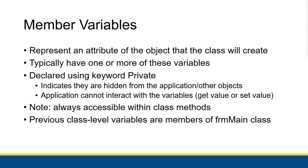The first thing I want to talk about is the member variable of a class. A member variable represents an attribute of the object that the class will create — some fundamental property of that object. For the rectangle class introduced in the last video, the member variables will hold the length and the width. A class will typically define one or more of these variables, but you have to declare them using the keyword private.